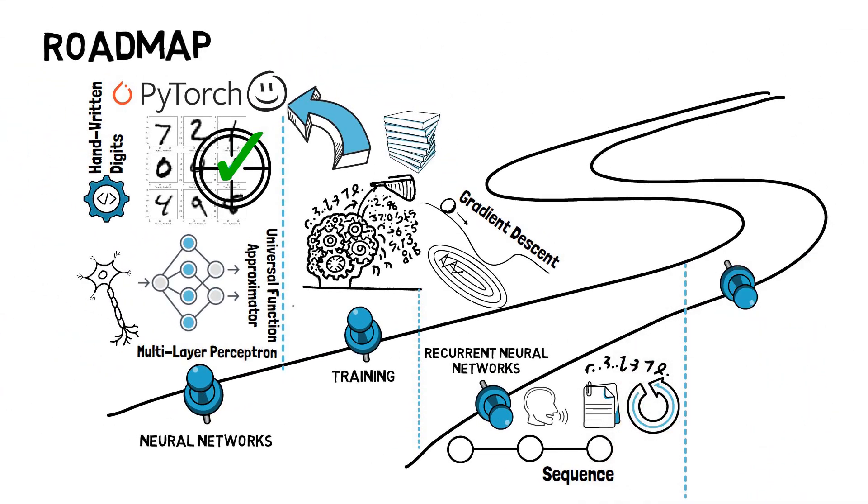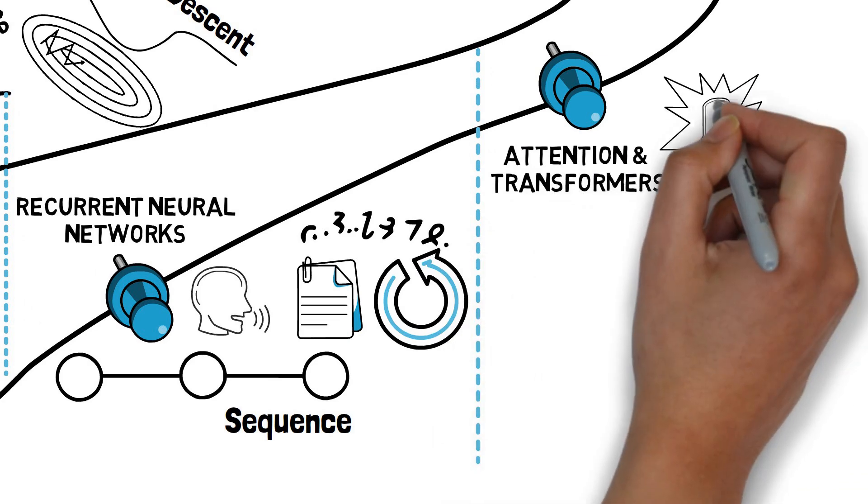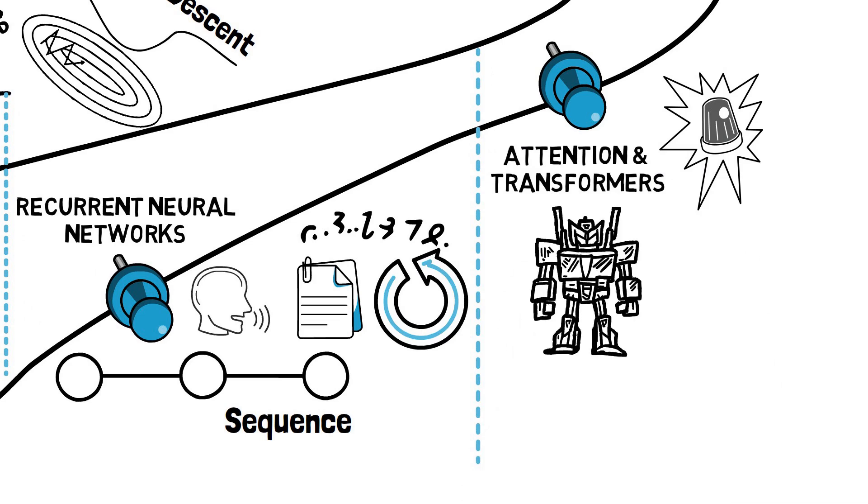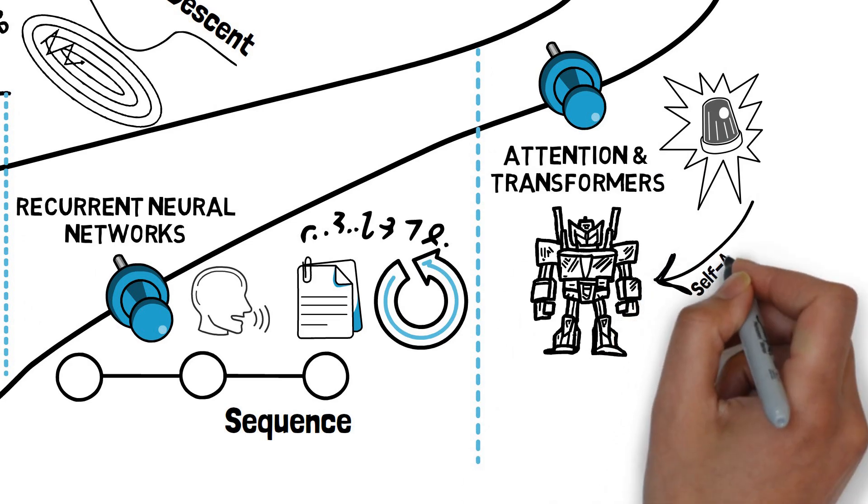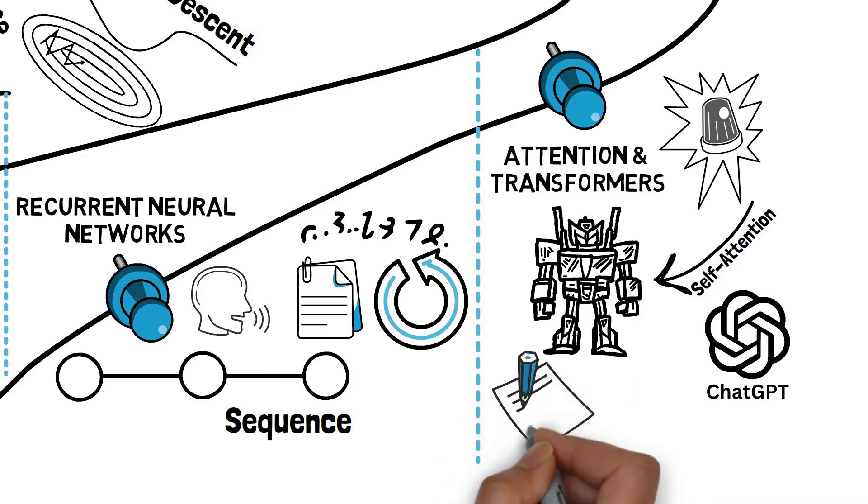Our journey will then take us to the world of attention and transformers. These concepts form the basis of modern LLMs. In particular, we'll look at how attention is used in the transformer architecture, and how models such as ChatGPT use a subset of this architecture. In the lab, we'll harness a transformer for text summarization.